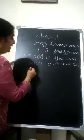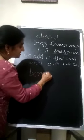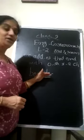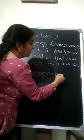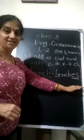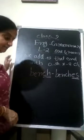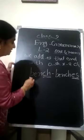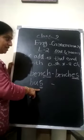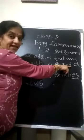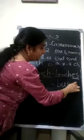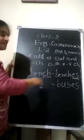For example, bench — B-E-N-C-H. What are the last two letters? CH. So, we are going to add ES to this: B-E-N-C-H-E-S. Another example: bus — B-U-S. The last letter is S. Since it ends with S, we add ES, so it becomes buses — B-U-S-E-S.